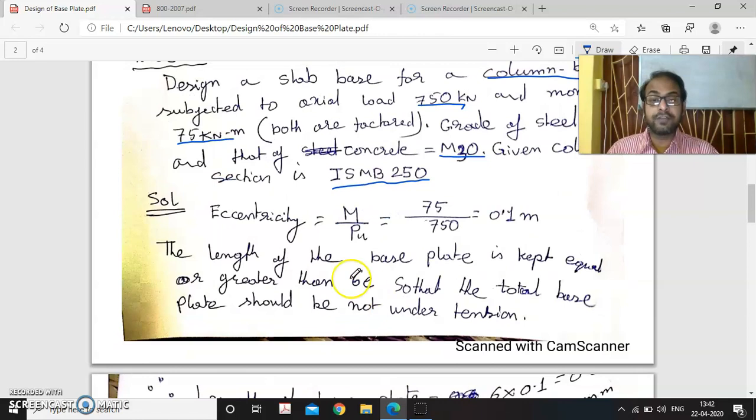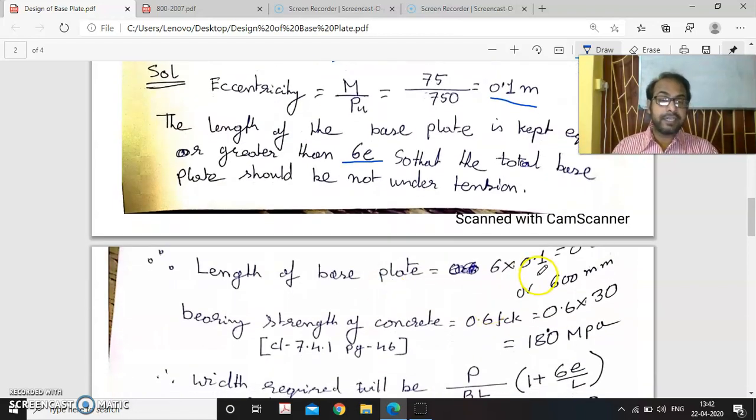First of all, we have calculated the eccentricity because we know moment equals P into E. So E equals M by P, that is eccentricity. E is coming as 0.1 meter, that is 100 millimeter. Now to maintain the middle third rule so that no tension is generated within the slab base area, we have to provide the length of the column greater than or equal to 6E. So we have calculated this as 6E, which is coming as 600 millimeter, and the permissible strength is coming as 18 MPa by multiplying 0.6 with 30.